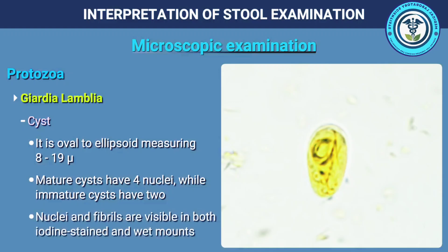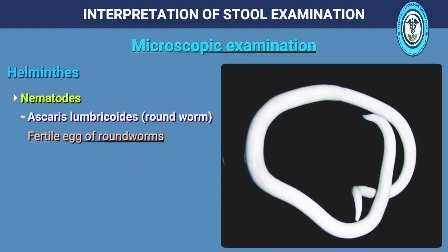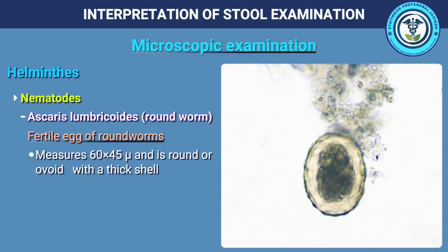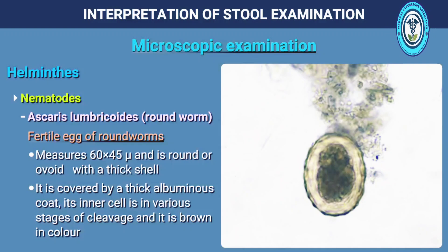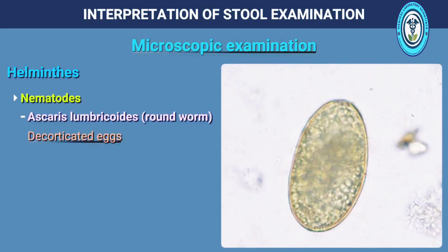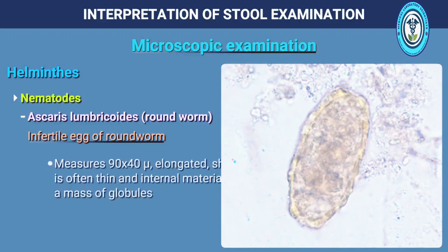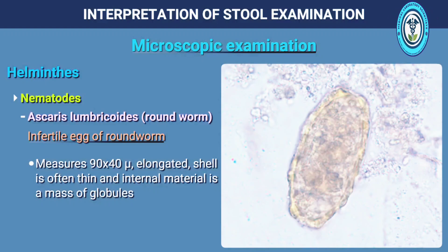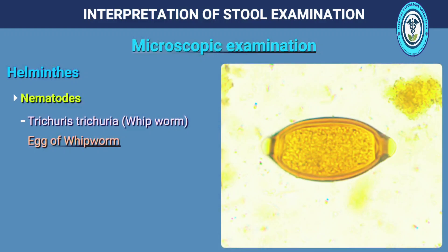Nuclei and fibrils are visible in both iodine-stained and wet mounts. Ascaris lumbricoides (roundworm): the fertile egg measures 60 by 45 microns. It is round or ovoid with a thick shell, covered by a thick albuminous coat. Its inner cell is in various stages of cleavage and it is brown in colour. Decorticated eggs have the albuminous coat lost. The infertile egg measures 90 by 40 microns; it is elongated with a thin shell and its internal material is a mass of globules.